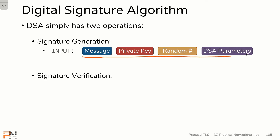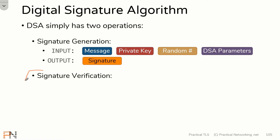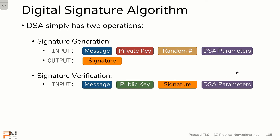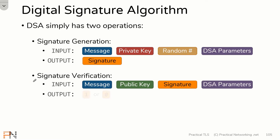If you feed those four things into the signature generation operation, DSA is going to output a signature correlating to that message. The signature verification operation also requires four things: the message you're trying to verify, the public key correlating to the private key used to create the signature, the signature itself, and those same DSA parameters. If you run these four things through the signature verification operation, DSA will output a 1 or a 0, indicating true or false — whether the signature is valid or invalid.